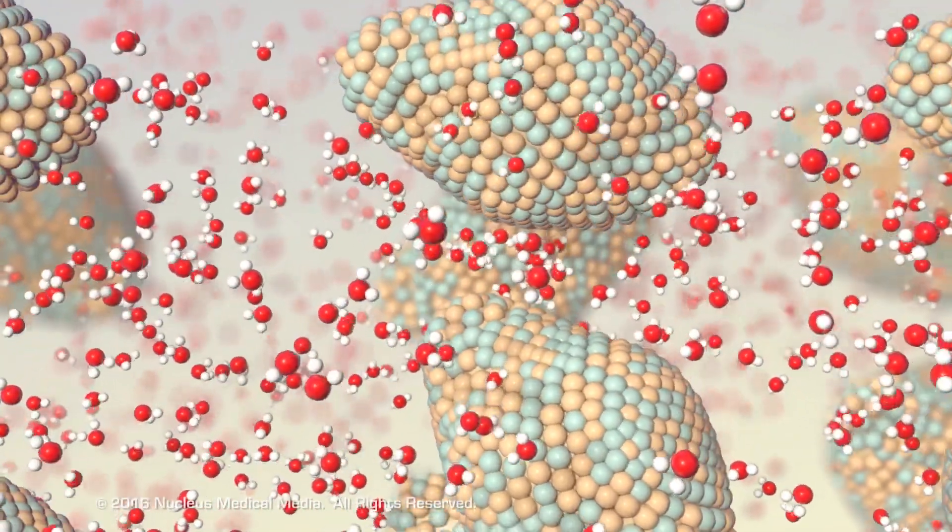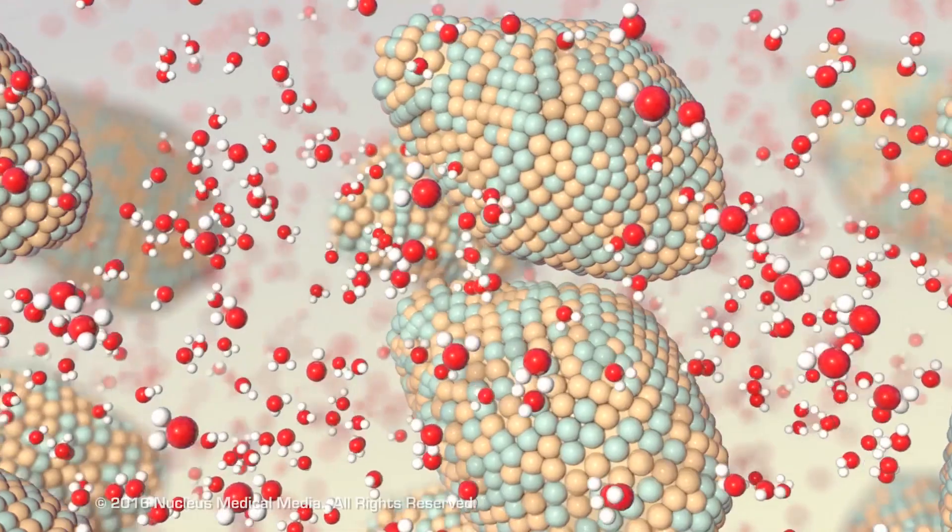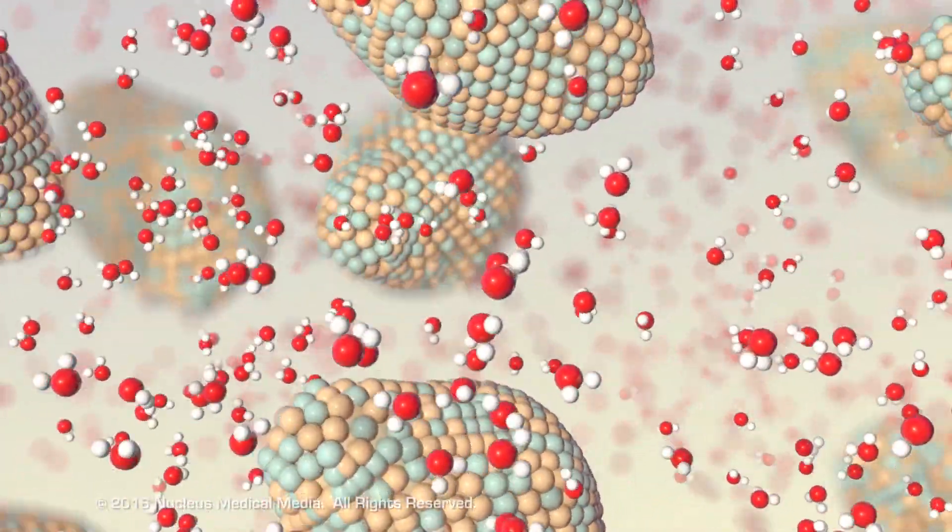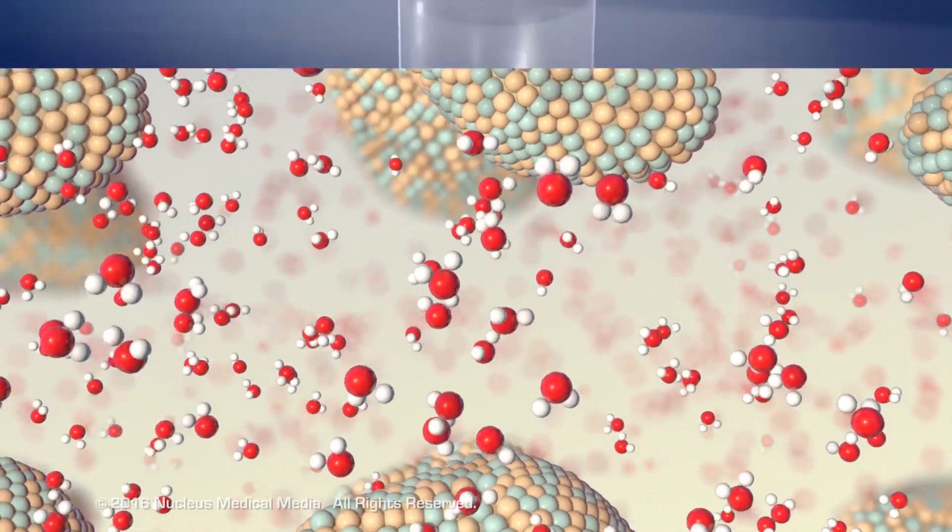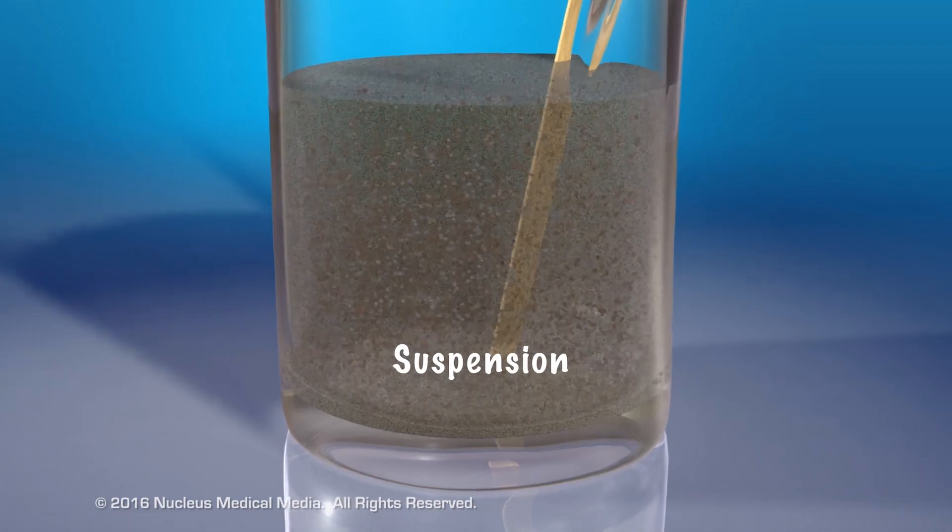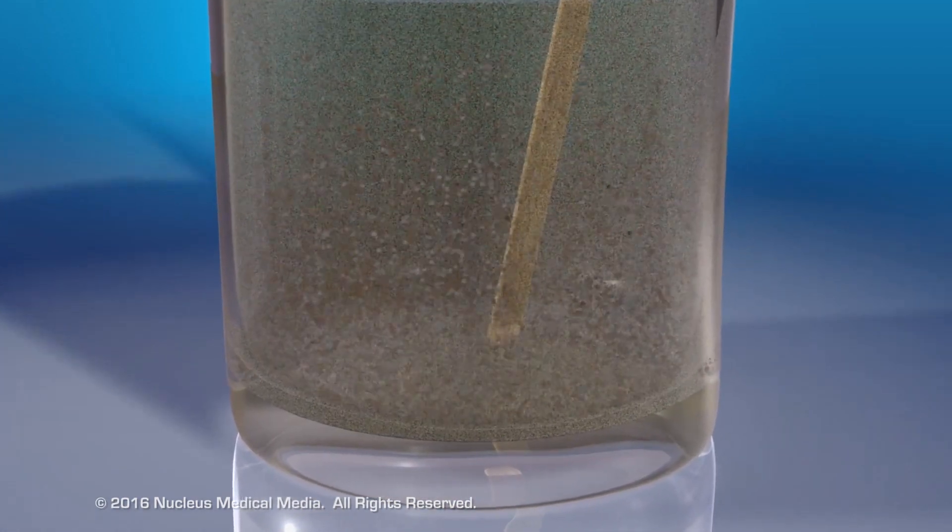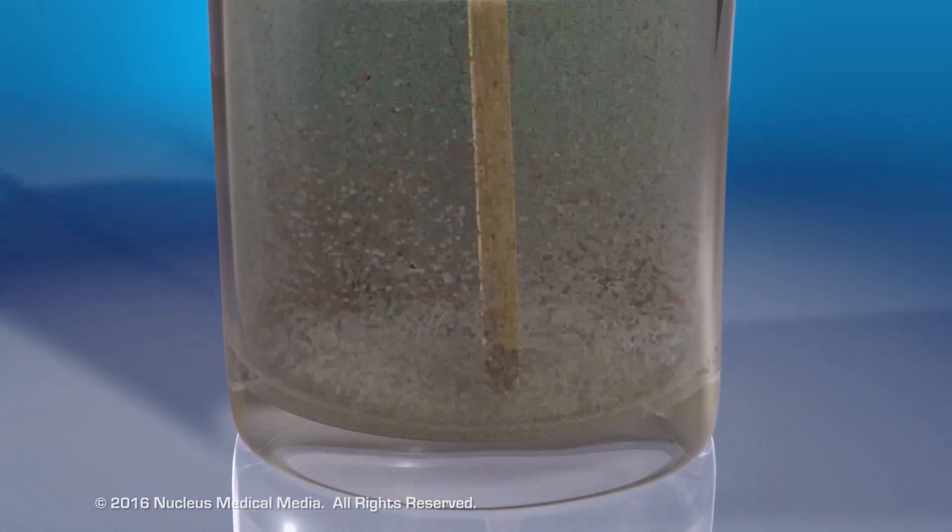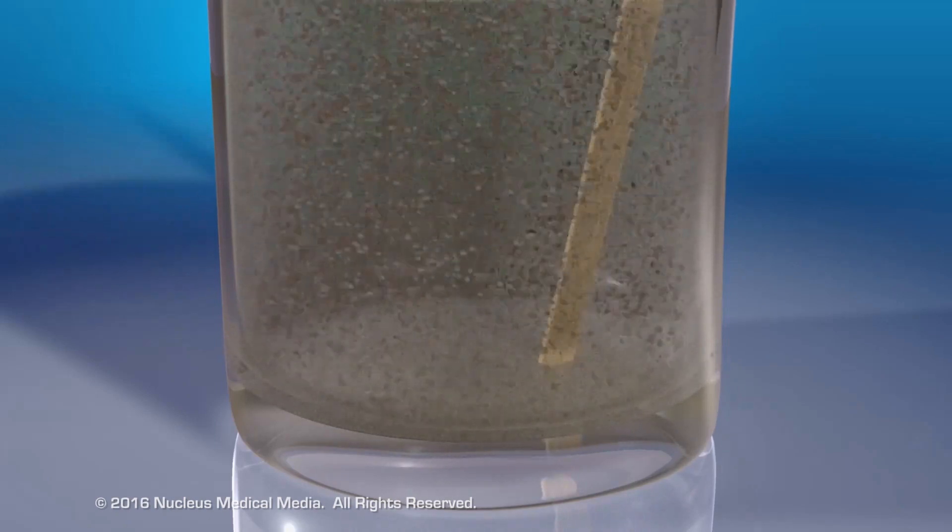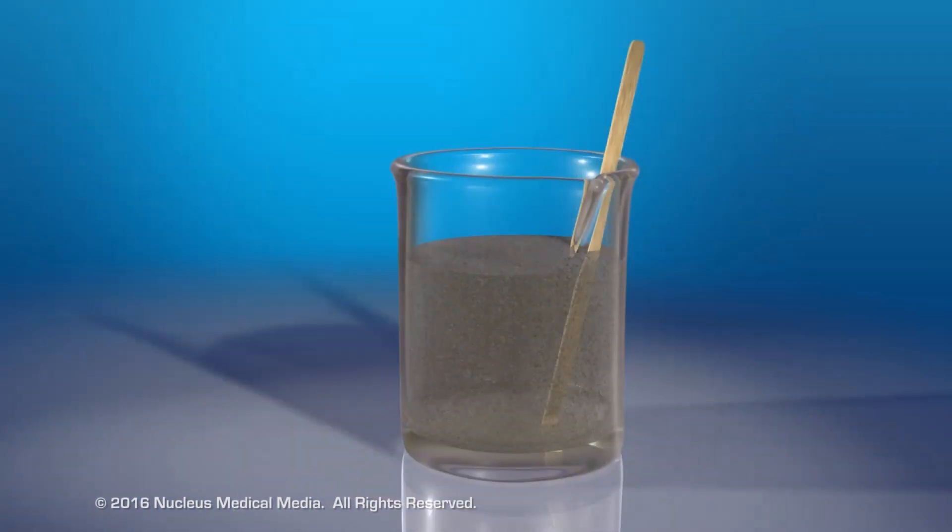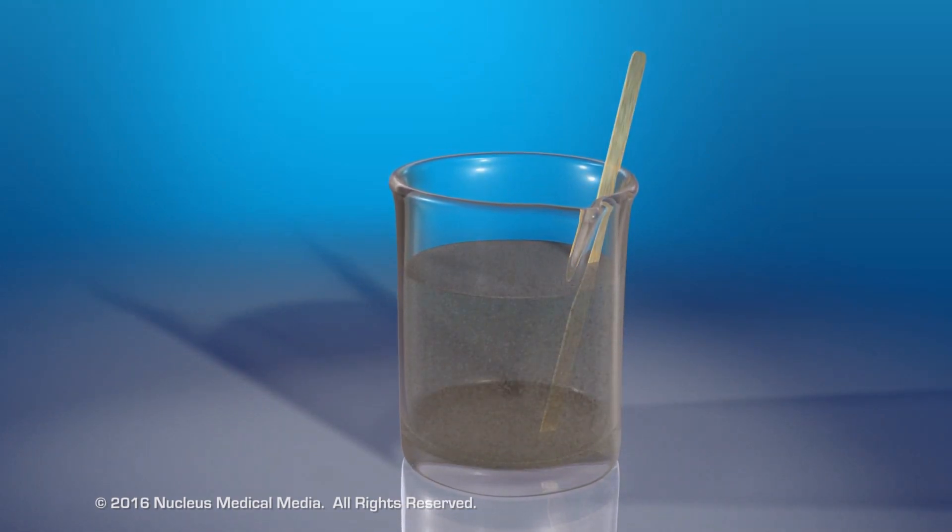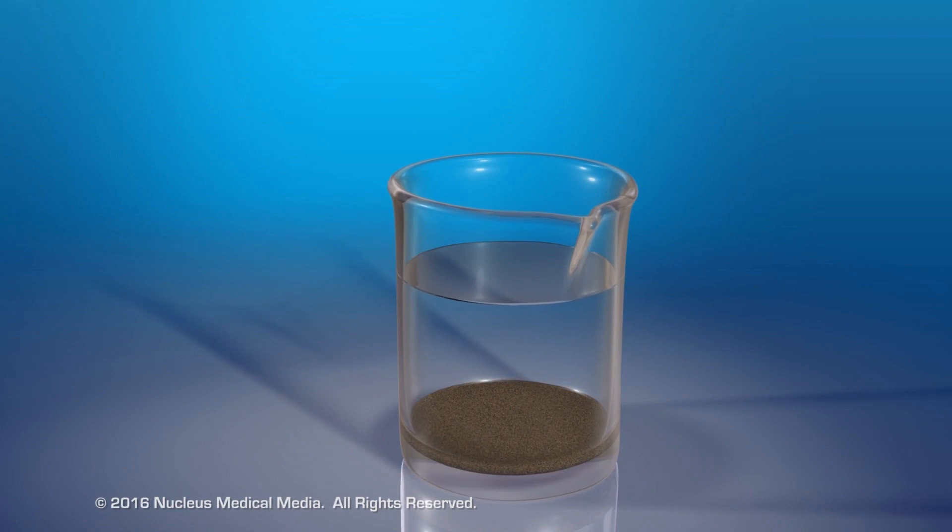As big as these particles are, they're still small enough that the random motion of the water molecules keep them mixed within the water. In contrast, suspensions contain even larger particles than those in colloids, but the particles are just small enough to be suspended in water when stirred or shaken. Over time, however, the particles in a suspension start to settle to the bottom of the container.